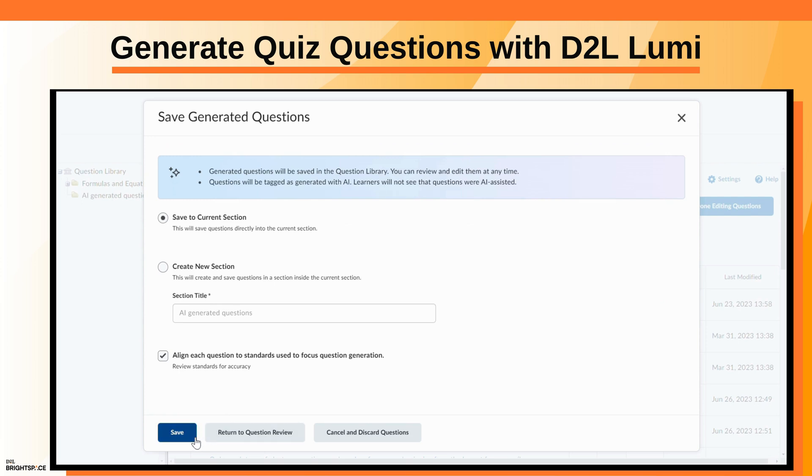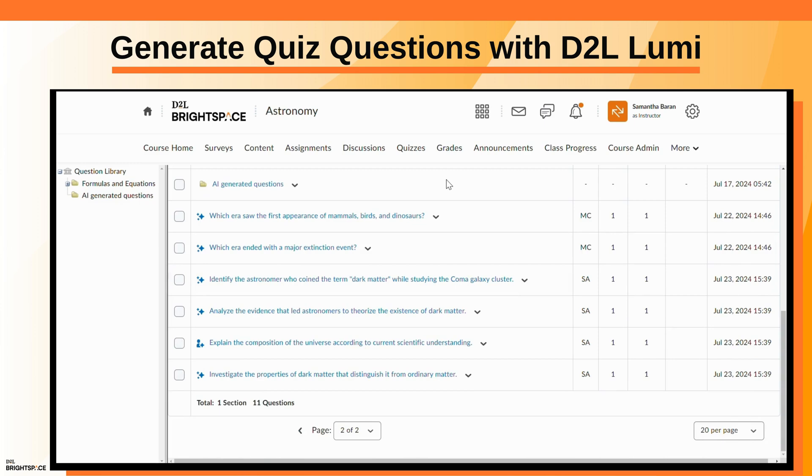Your questions appear in Question Library and are denoted as AI-generated. The Spark icon appears for a question that was AI-generated and reviewed by a human, and the person with Spark icon appears for a question that was AI-generated and edited by a human.